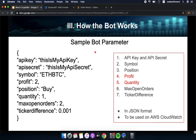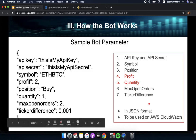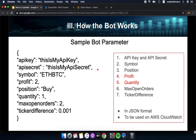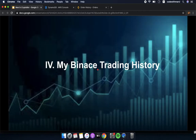This is the sample bot parameter — the seven parameters you will be using. You can edit the profit and quantity as you prefer, but for the others like maximum open position, maximum open orders, and ticker difference, you can use the default recommended values. These will be in JSON format and used on your AWS CloudWatch account.